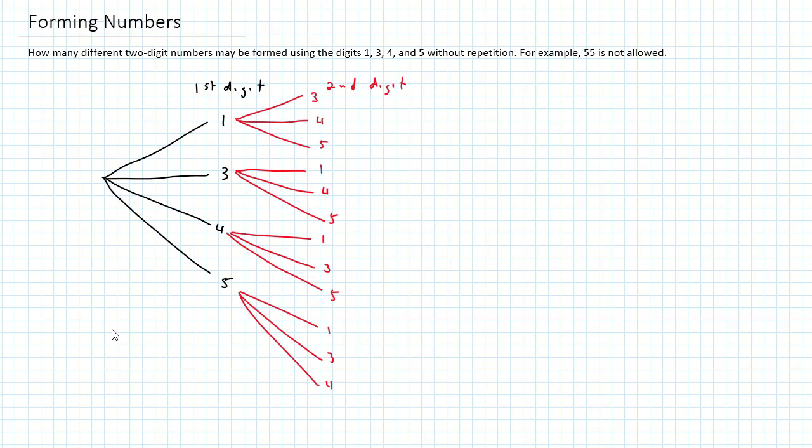So I could have 13, 14, 15, 31, 34, and so on. If I count up all of these possibilities here, the total number of branches are going to be 1, 2, 3, 4, 5, 6, 7, 8, 9, 10, 11, 12. So there are 12 two-digit numbers.